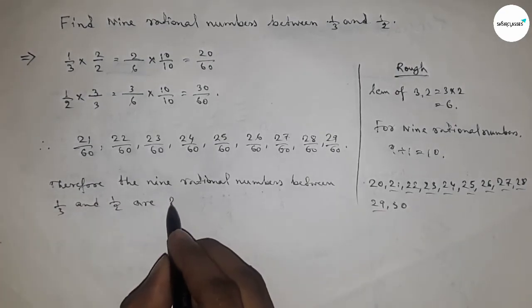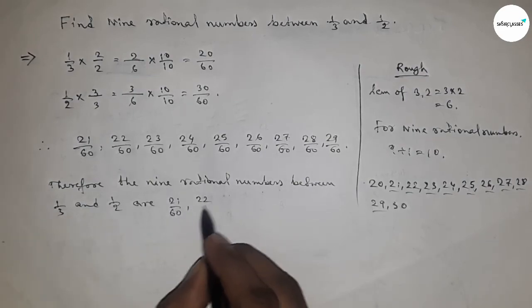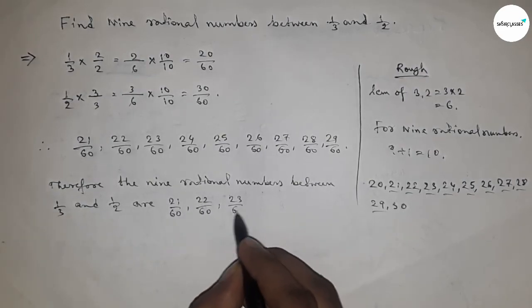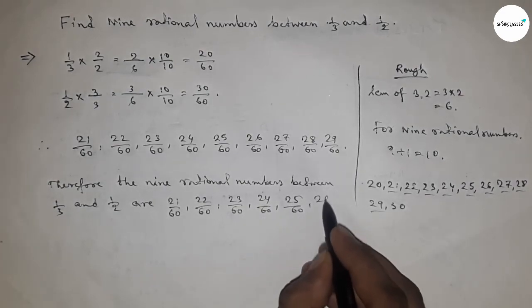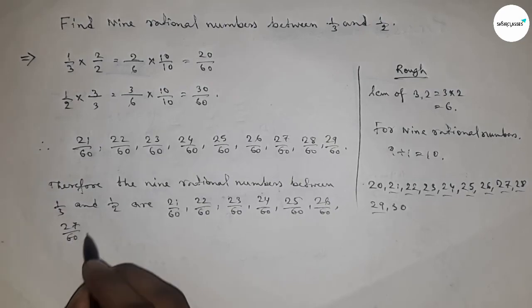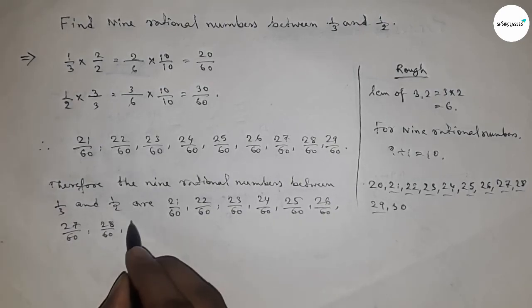to 29/60. So this is the process to find nine rational numbers between 1/3 and 1/2.